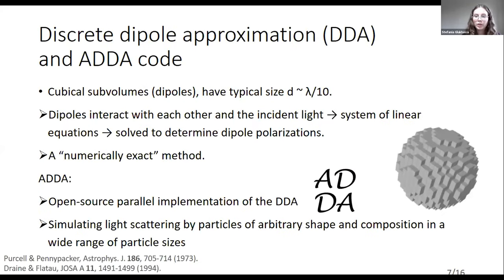The discrete dipole approximation is a method that allows simulating scattering by arbitrary particles. In this method, the scattering particle is divided into cubic sub-volumes that can be replaced by point dipoles, and the resulting scattering field is found by considering dipole interaction with each other and with the incident light. It is important to note that this method is numerical, and one of the most popular DDA implementations is the ADDA open source code.